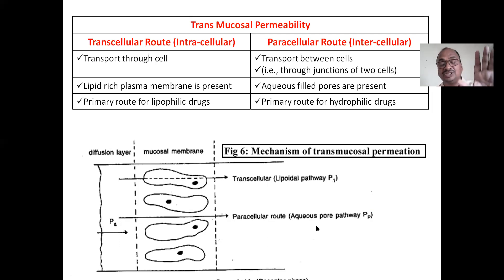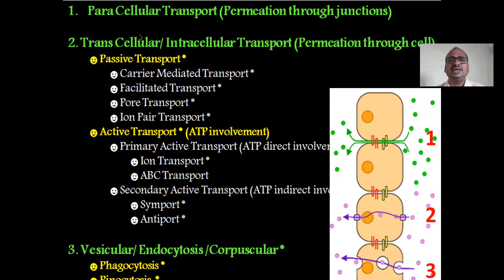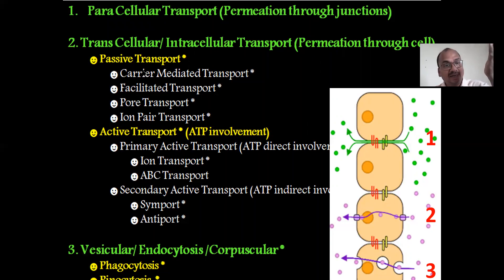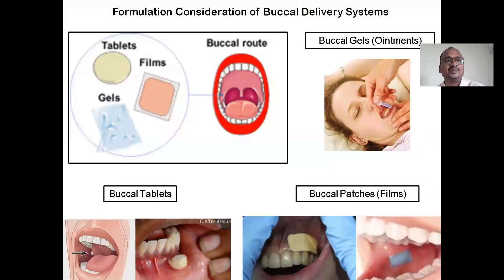These are the two main important transport routes you must write well in the examination. In transcellular transport, you further get passive transport, active transport, and carrier-mediated transport. For more detail on mechanism of drug transport, you can refer to my Biopharmaceutics and Pharmacokinetics (BPPK) subject videos.